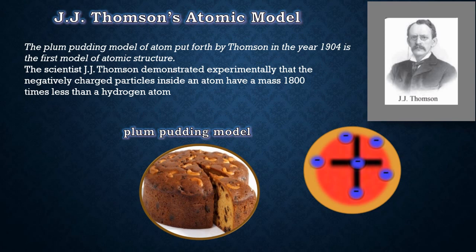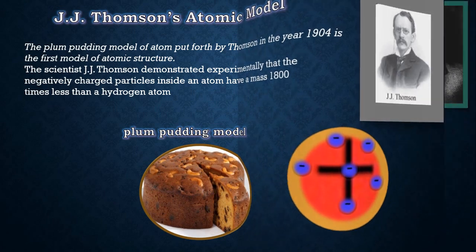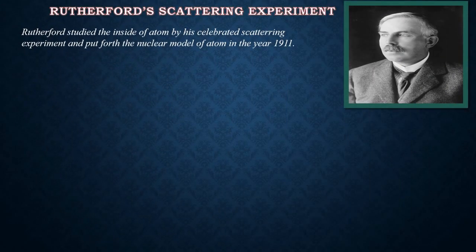This model was extremely simple but was a major breakthrough in scientific history, since earlier it was believed that an atom is electrically neutral in spite of having negatively charged electrons. Thompson overcame this difficulty with the plum pudding model. Next, let's understand Rutherford's scattering experiment, by which he studied the inside of an atom and put forth the nuclear model of the atom in the year 1911.